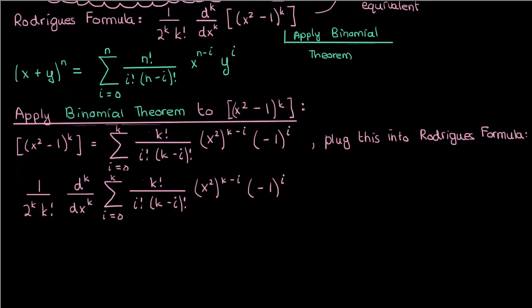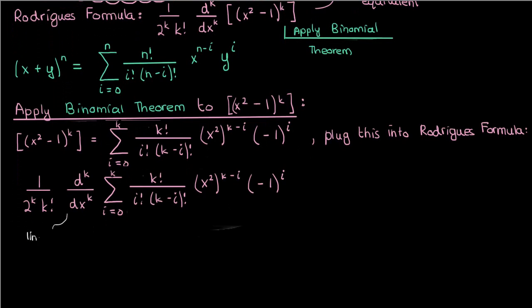Now the fun part begins. Recall that the derivative is a linear operator, which means that the derivative of the sum of multiple functions is the sum of their derivatives. What this means is that I can move the derivative inside the summation. Since the k's, i's, and negative 1's are all constant, I can move the derivative to the point that it's only being operated on the x squared term.